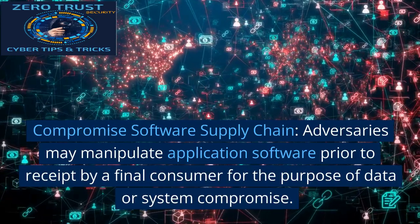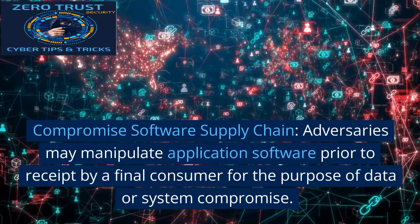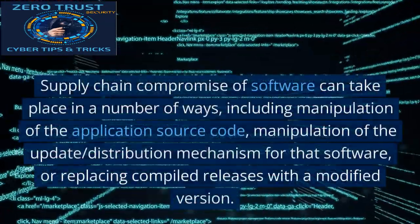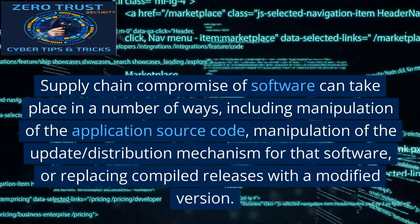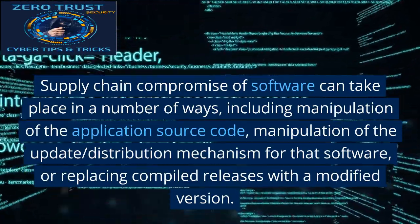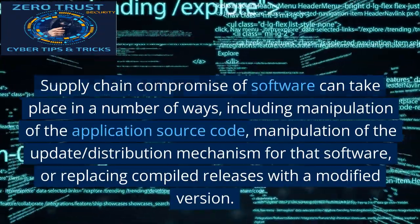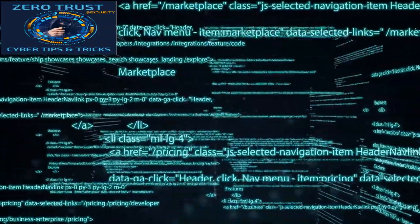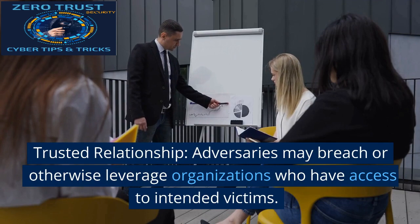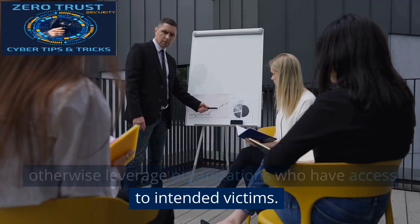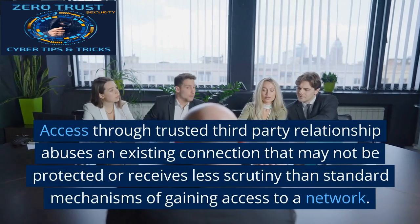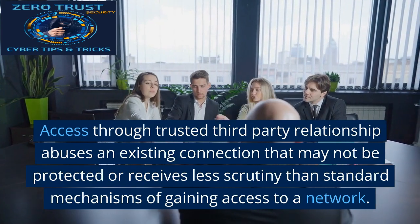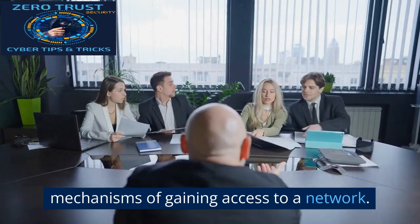Compromise Software Supply Chain: Adversaries may manipulate application software prior to receipt by a final consumer for the purpose of data or system compromise. Supply chain compromise of software can take place in a number of ways, including manipulation of the application source code, manipulation of the update distribution mechanism for that software, or replacing compiled releases with a modified version. Trusted Relationship: Adversaries may breach or otherwise leverage organizations who have access to intended victims. Access through a trusted third-party relationship abuses an existing connection that may not be protected or receives less scrutiny than standard mechanisms of gaining access to a network.